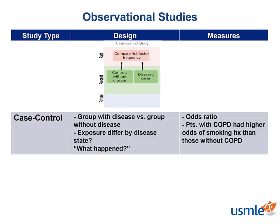A case control study asks what happened, because it is observational and retrospective. It looks into the past and compares a group of people with disease to a group without disease. The cases are the subjects with disease, the controls are subjects without disease, and in any case control study you are analyzing previous exposure. The typical metric for case control studies is the odds ratio, defined as the ratio of the odds of exposure in the case group to the odds of exposure in the control group.